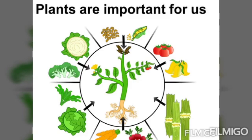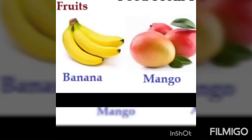We use different parts of plants for food — like root, stem, leaf, fruit, flower, and seed. Some examples are shown here. You should find out more examples and write them in your science diary.